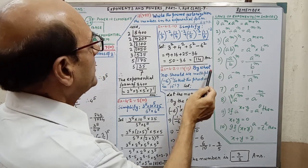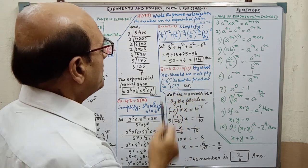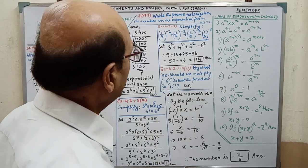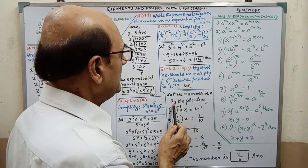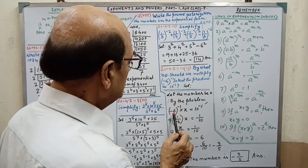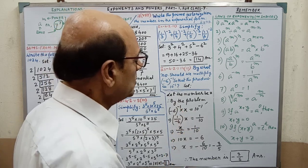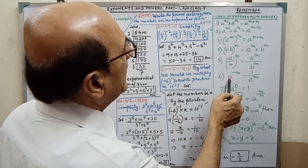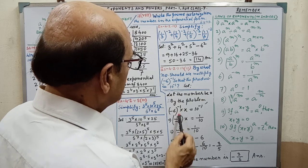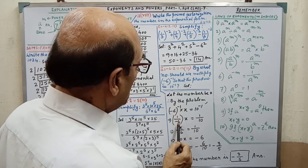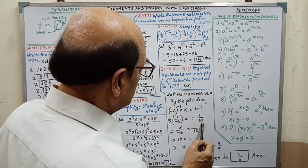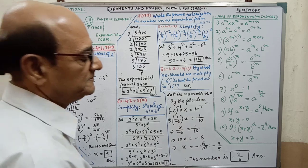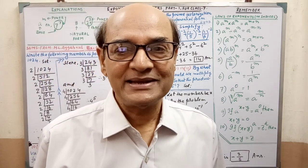Next sum: by what number should minus 6 whole to the power minus 1 be multiplied so that the product is 10 to the power minus 1? Let the number be x. Then by the problem, minus 6 whole to the power minus 1 into x equals 10 to the power minus 1. Applying the law that A to the power minus n equals 1 by A to the power n, and simplifying, we get x equals 3 by 5. That is the number we have to multiply. Sum is completed.